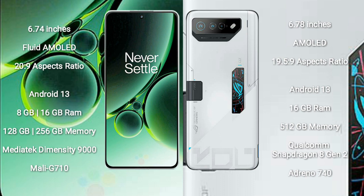OnePlus Nord 3 comes with 8GB or 16GB RAM and 128GB to 256GB internal storage, powered by the MediaTek Dimensity 9000 processor with GPU Mali-G710.